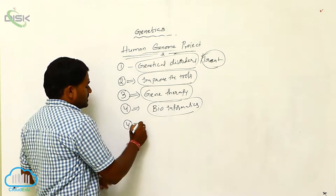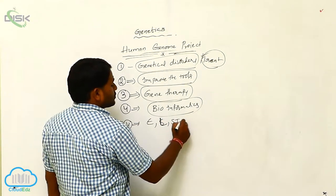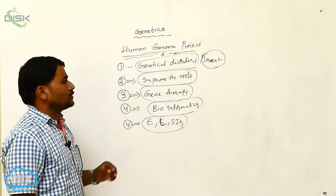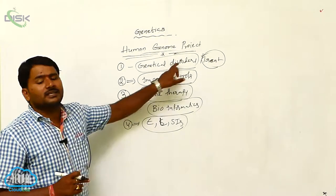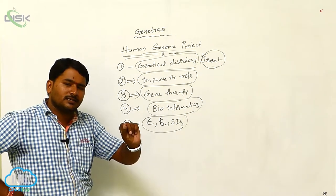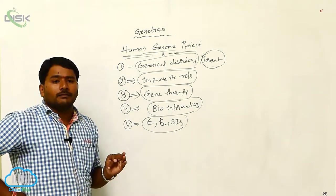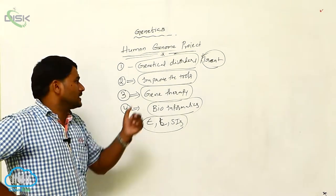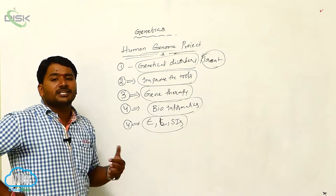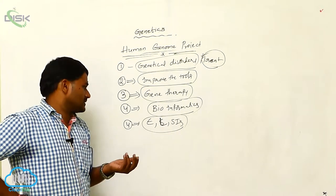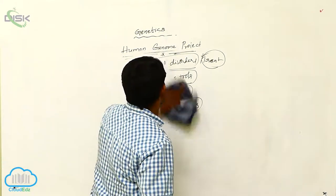The Human Genome Project has its application in so many ethical, legal, and social issues. We are applying the Human Genome Project in recombinant DNA technology. It is used for identifying genetic disorders — their reasons and remedies. We are improving medical treatment and tools for genetic disorders, performing gene therapy, developing bioinformatics, and solving ethical, legal, and social issues. These are the applications of the Human Genome Project.